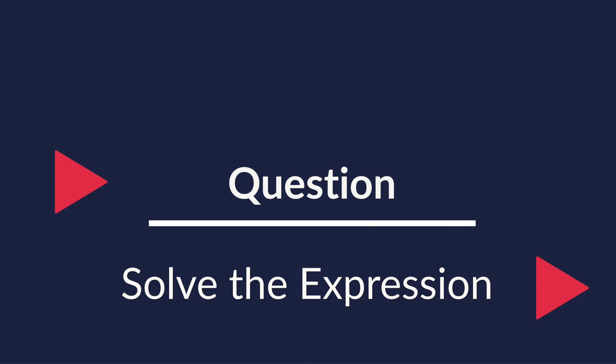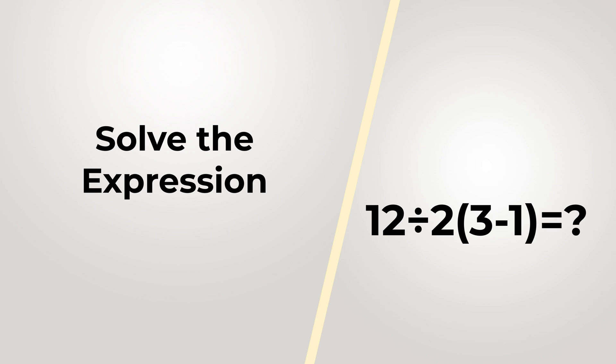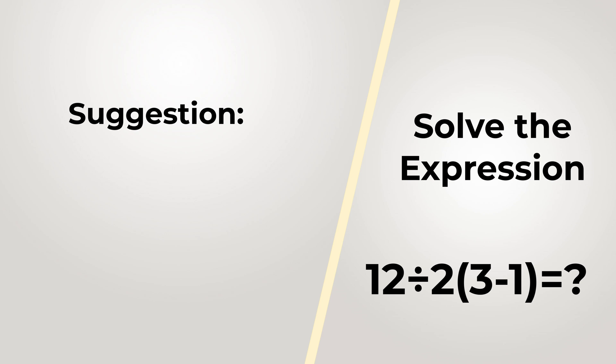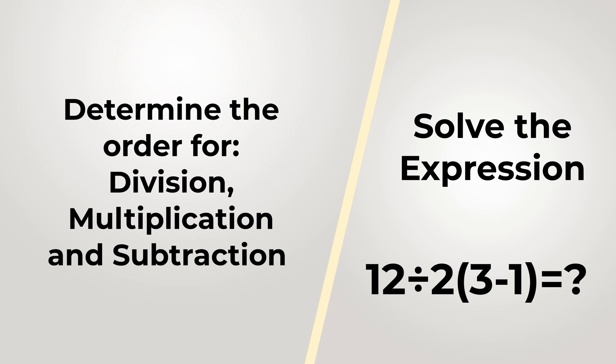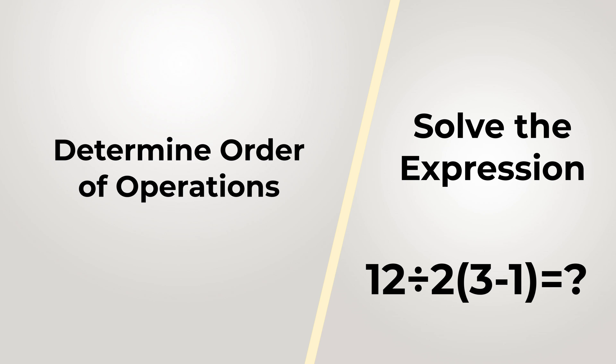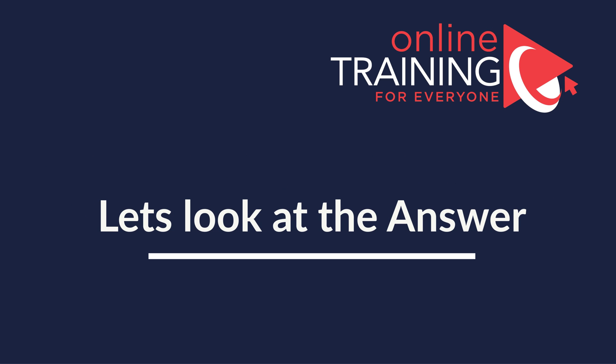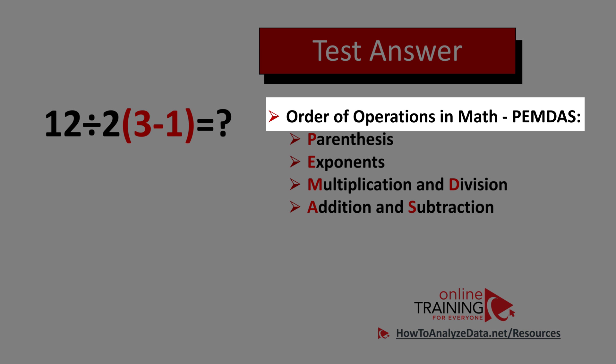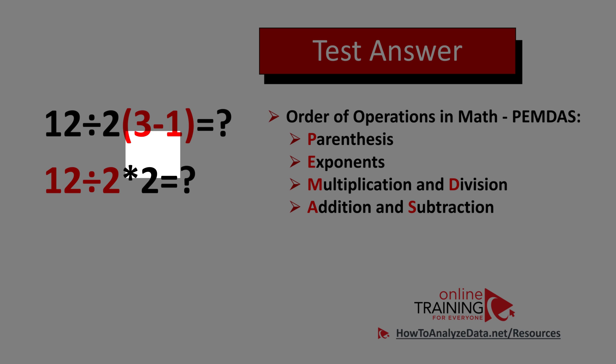Here's an interesting question which is easy to understand, but at the same time you will have a lot of fun solving it. You need to calculate this simple expression: 12 divided by 2, and then multiplied on the value in parentheses, which is 3 minus 1. Take a look closely and see if you can come up with the answer. There are three operations here: division, multiplication, and subtraction. All you need to determine is which one to do first, second, and third. Do you think you know the answer? Let's continue and get it solved together.